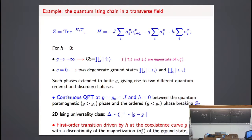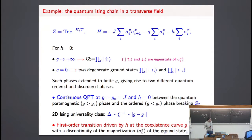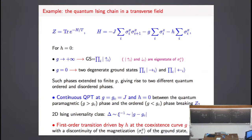In this model we also have a first-order quantum transition. If we are in the ordered phase and we add a magnetic field h coupled to sigma-x, when h passes through zero there is a discontinuity in the magnetization — the expectation value of sigma-x — so we have a first-order transition. This is very similar to what happens in the case of classical models.